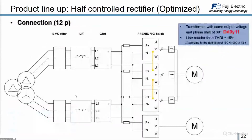Another connection method is connecting two rectifiers in parallel on the output of a transformer with two outputs — one star and one delta. This is called a 12-pulse connection. Starting from the left: a transformer with star and delta outputs, and on each output a GR9 rectifier with external EMC filter and line reactor. The DC outputs are connected together to supply a DC link, which in this example powers two motors — one controlled by three parallel inverter modules and one by a single inverter.